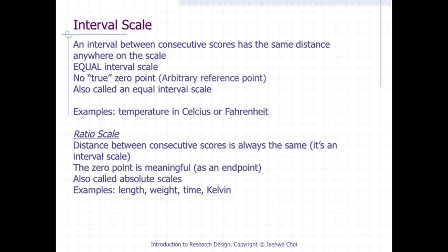The interval scale assumes an interval between consecutive scores that has the same distance anywhere on the scale — in other words, it is an equal interval scale, but the reference point is arbitrary. Examples of this measurement scale include temperature in Celsius or Fahrenheit.